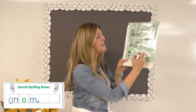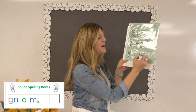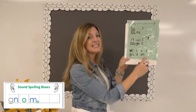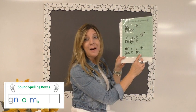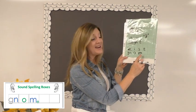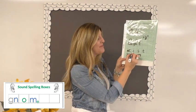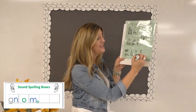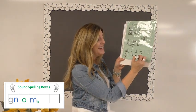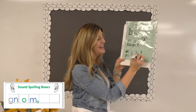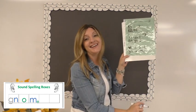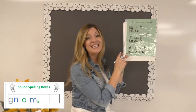G-N, then O-M. I know that this would actually say 'nom,' so I need to do something to make my vowel long — I'm going to add my magic E. This is gnome.